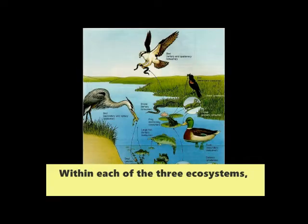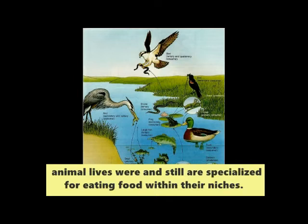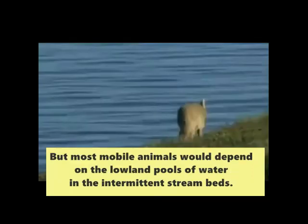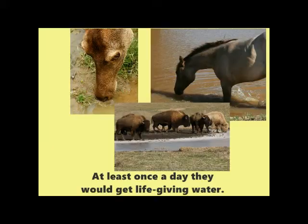Within each of the three ecosystems, animal life was and still is specialized for eating food within their niches. But most mobile animals would depend on the lowland pools of water in the intermittent stream beds, visiting at least once a day to get life-giving water.